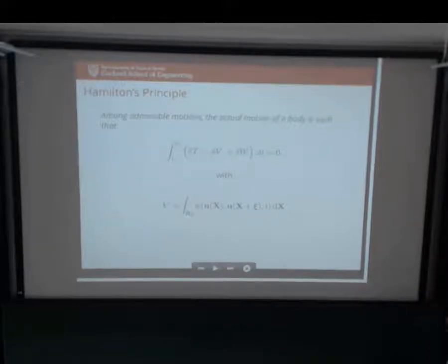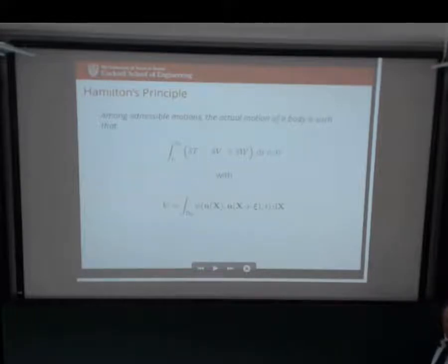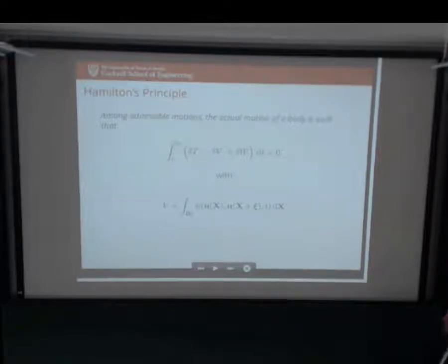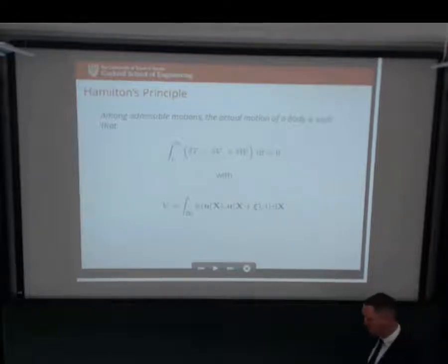In a peridynamic body, we say that the total potential energy at point X is a function of the displacement at point X and every other point in the body - X plus XC, where XC is just a vector from X to every other point in the body. This is the most general thing we can do. We're saying the total potential energy is a function of not only the displacement at X, but the displacement everywhere in the body. This is the only correct thing to do without approximation - it's an approximation to say the total potential energy is a function of the gradient of U.